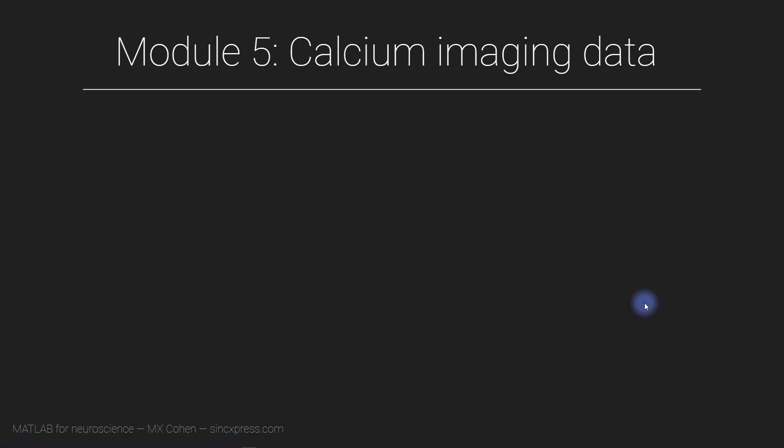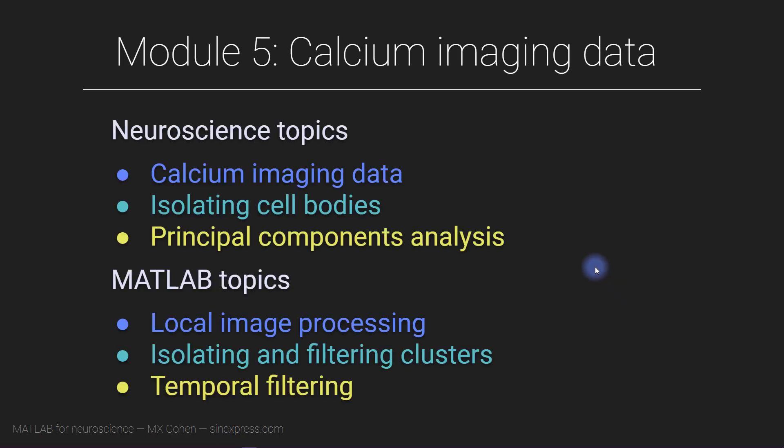Welcome to the fifth module of this course. We're going to work with calcium imaging data that were recorded over time. As you'll see in the first few videos, calcium imaging data require some image processing in order to reduce irrelevant background signal and to identify the neuron cell bodies in the images.